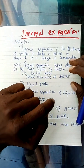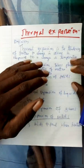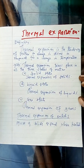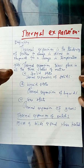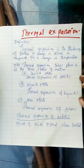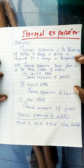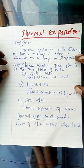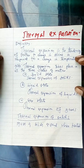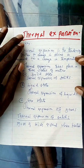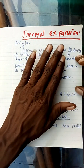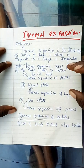Thermal comes from the word heat — thermal means heat. And expansion means increase in volume. It is expanding, that is to say there is an increase in volume. So thermal means heat and expansion means the increase in volume.